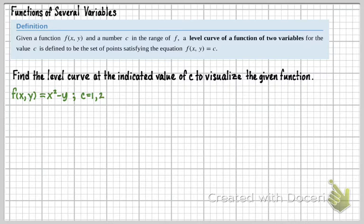So that means I'm just going to plug in one for my f(x,y). When I plug in one for it, I get one equals x squared minus y. If I solve this for y and think about this in a two-dimensional way, I would get y equals x squared minus one. Now if I graph this, this is just a shift of the parabola down one.